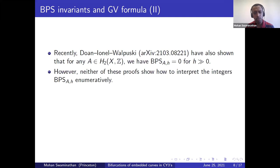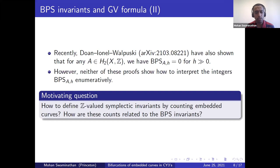An important point to note is that neither of these proofs actually show us how to interpret the integers BPS enumeratively. Therefore, the motivating question that we had is: how can we define integer valued symplectic invariants by counting embedded curves, possibly with some integer weights? And how are these counts related to the BPS invariants?